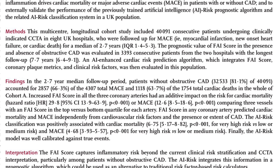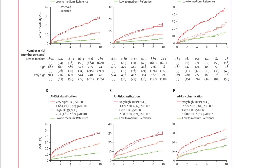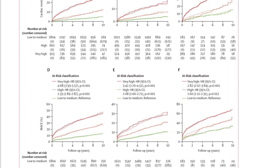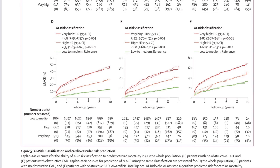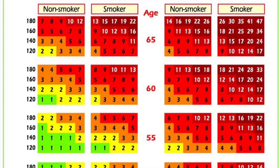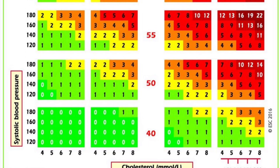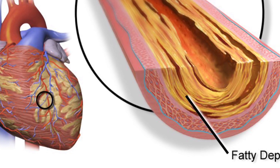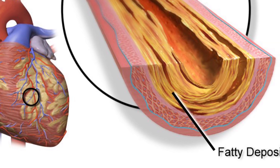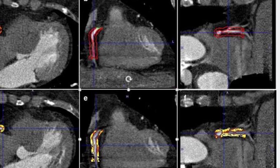This is massive. Key finding number three: the perivascular coronary fat attenuation index score predicted cardiac mortality and major adverse cardiac events independently of traditional cardiovascular risk factors like cholesterol, blood pressure, and diabetes, and independently of the presence or extent of coronary disease. Coronary inflammation is essentially an independent risk factor.